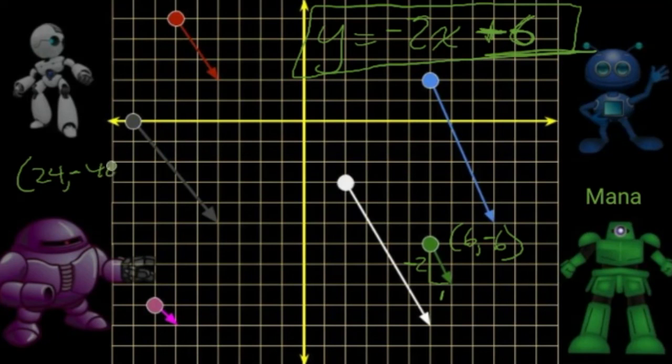Does this equation go through the point 24, negative 40? When x is 24, negative 2 times 24 is negative 48 plus 6, negative 42. So close, Mana misses the mark.